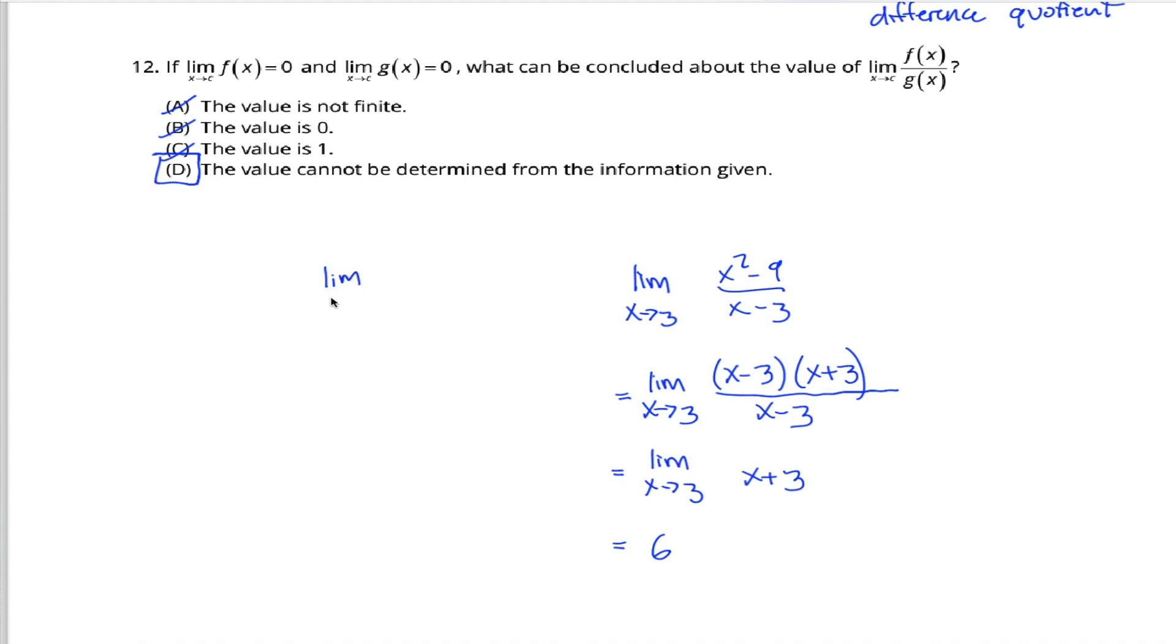For example, the limit as x approaches 4 of x squared minus 16 divided by x minus 4 going through the exact same steps would end up being equal to 8. Just because the numerator approaches 0 and the denominator approaches 0, that does not necessarily mean that the quotient approaches any specific number.